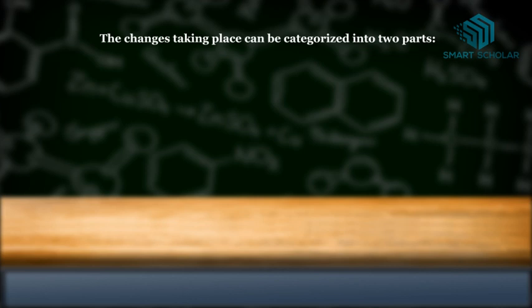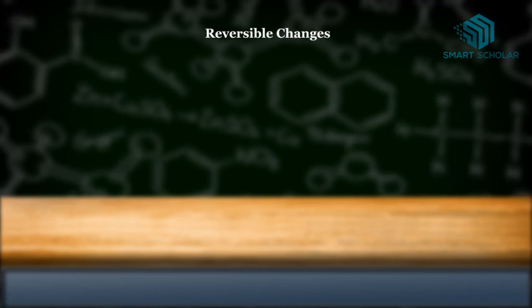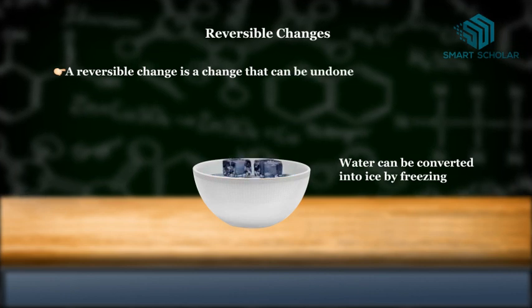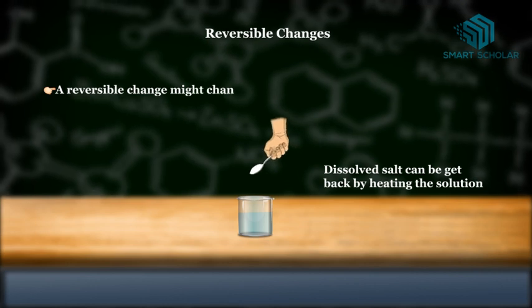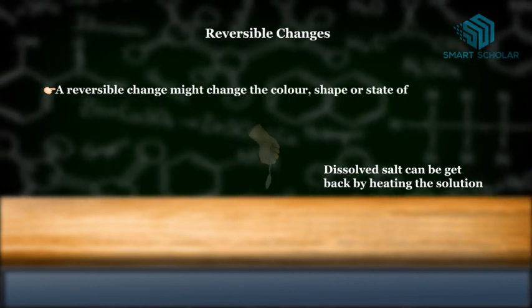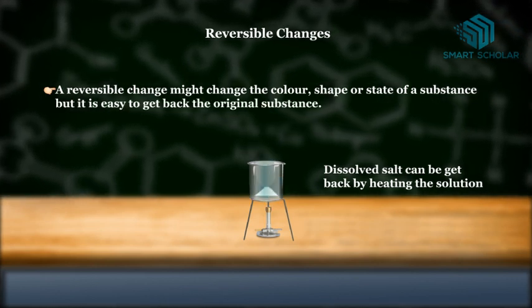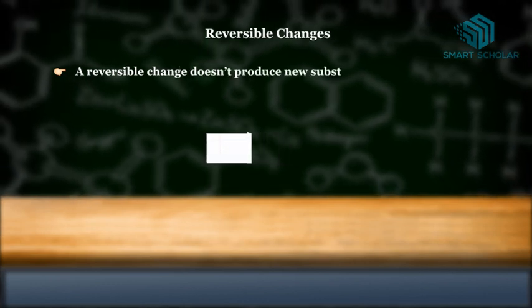First, let us explain reversible change. A reversible change is a change that can be undone or reversed. A reversible change might change the color, shape, or state of a substance, but it is easy to recover the original substance. A reversible change doesn't produce new substances.